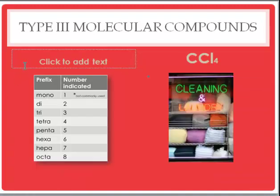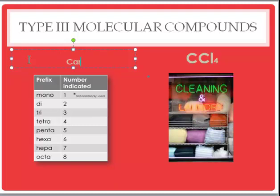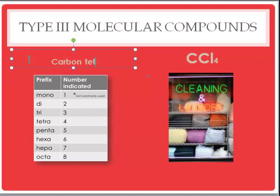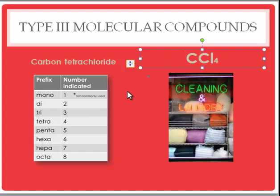CCl4 is a dry cleaning solvent. What would it be called? Well, it would be called carbon — and we have four chlorines, so the prefix is tetra, T-E-T-R-A — and then chloride. These are still binary compounds; they all still end in I-D-E and have two elements. So this dry cleaning solvent is called carbon tetrachloride.